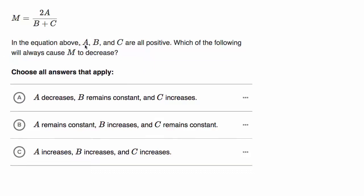We're told in the equation above, A, B, and C are all positive. So this is the equation that says M equals two times A over B plus C. Which of the following will always cause M to decrease? Choose all answers that apply. Pause this video and see if you can work through it before we work through it together.